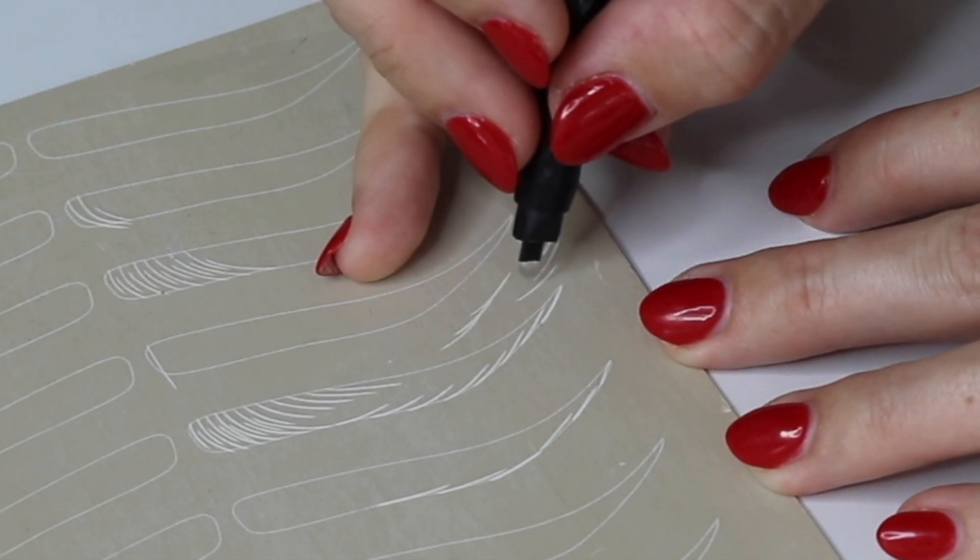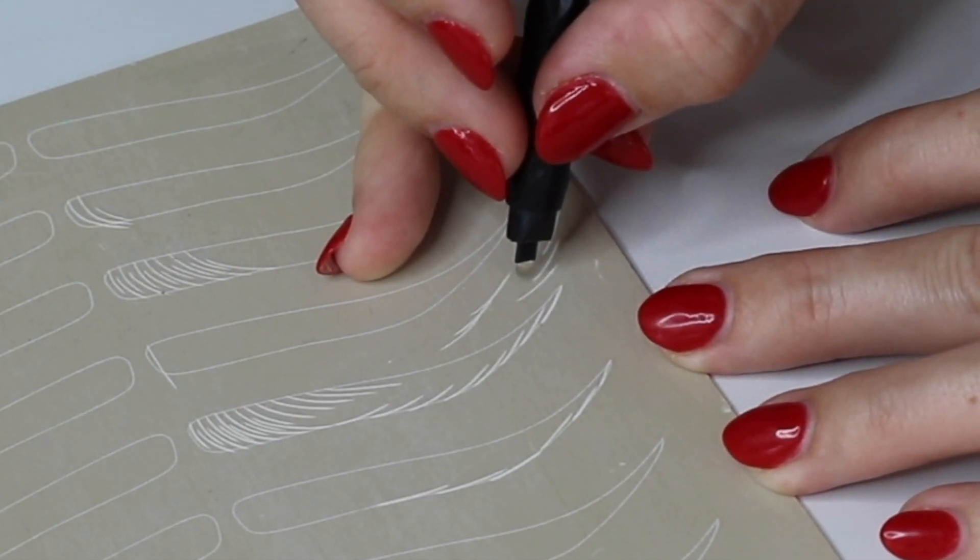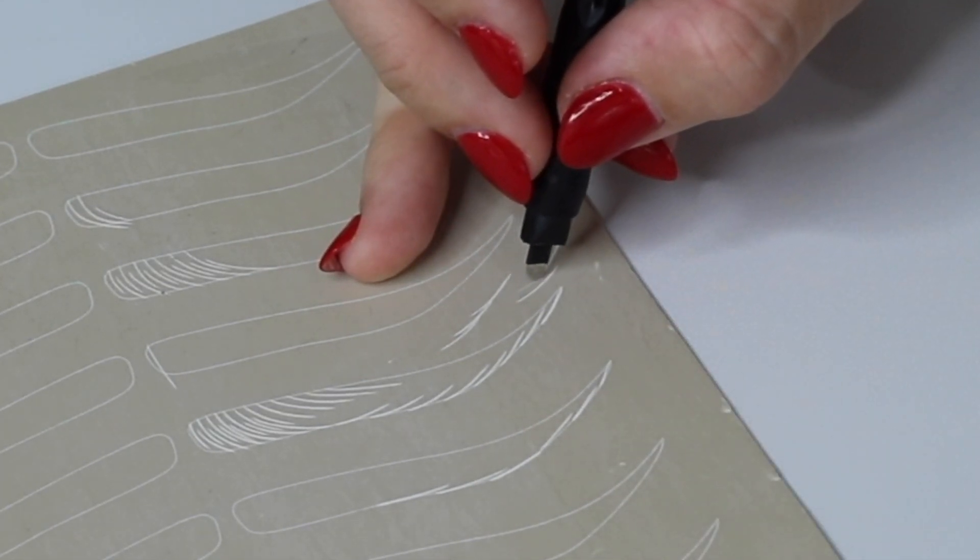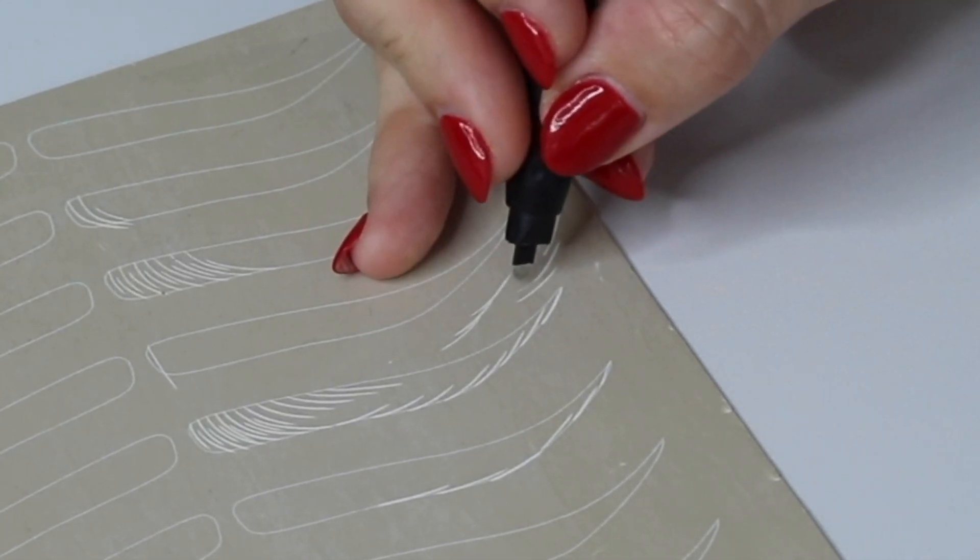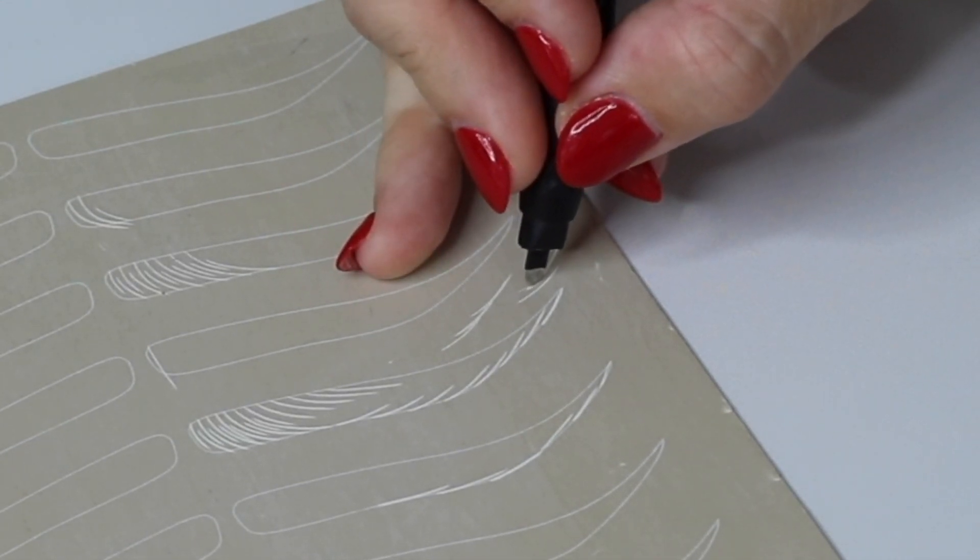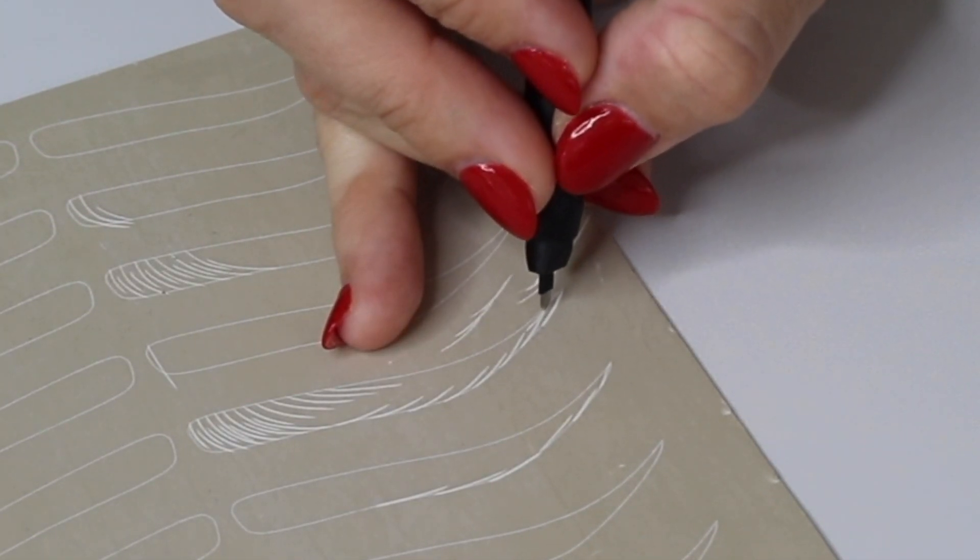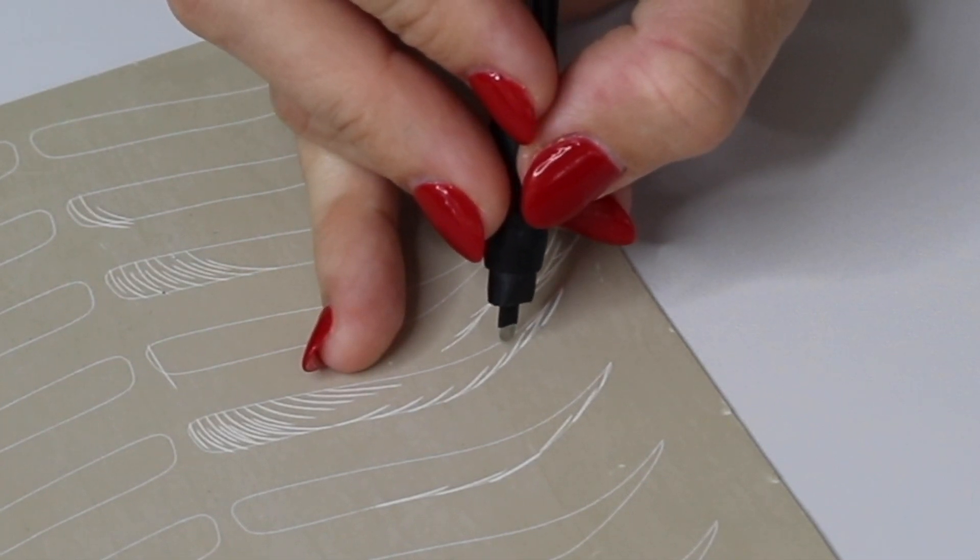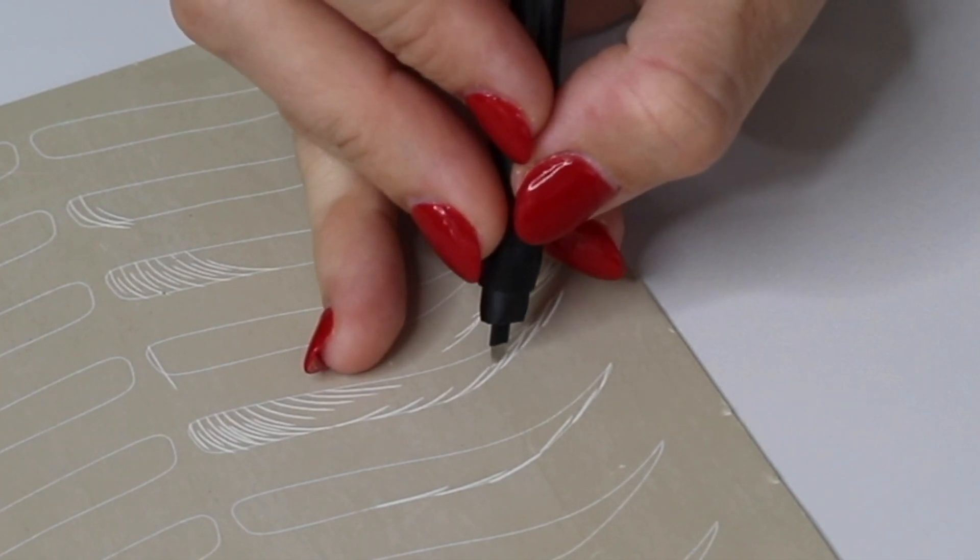If I want those strokes to connect my blade needs to drastically change positions. It needs to come this way so that it's pointing in toward the tip of that stroke before it. So that I can get it to connect. So always paying attention to where you want your stroke to end and what that means or what that looks like when it comes to where your blade needs to be pointing.